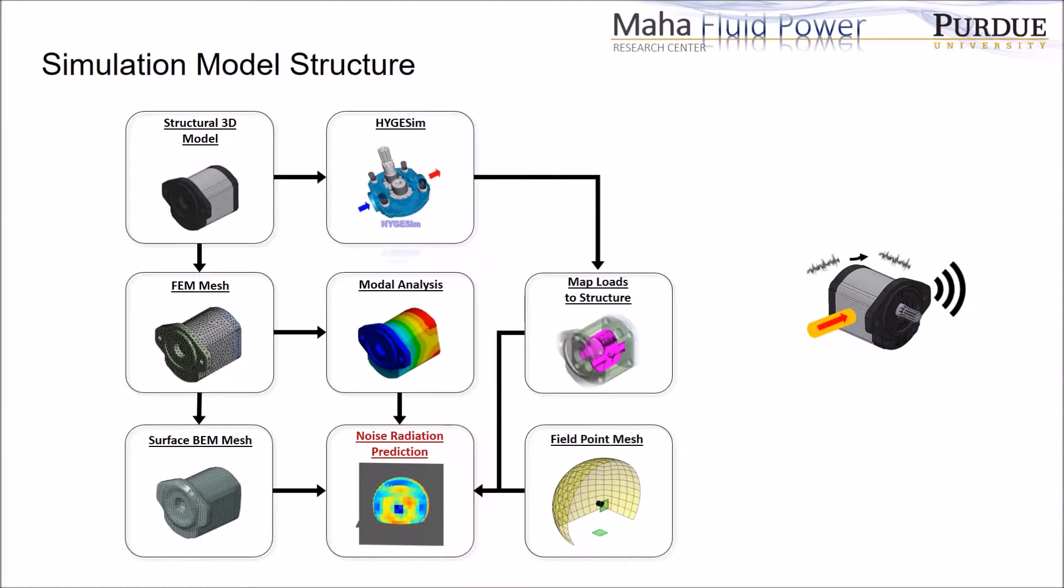In this figure, we can see the structure of the simulation model, and the model uses proper methodologies for each domain. For the fluid-borne noise, the lumped parameter approach is used. For the structure and air-borne noise, a combined FEM-BEM approach is used. Now, let's take a look at the details of each step.